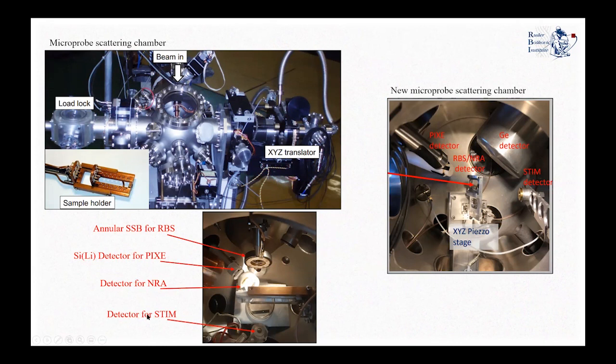On the right side, we see the similar setup on the new microprobe. Here we can control the target position with a piezo stage manipulator. We have, as in the other microprobe, a pixel detector, an SDD this time, and a self-biased bar detector used for Rutherford backscattering or nuclear reaction analysis. We also have a germanium detector for PIGE applications, and at forward angles a STIM detector that can be placed on-axis or off-axis.